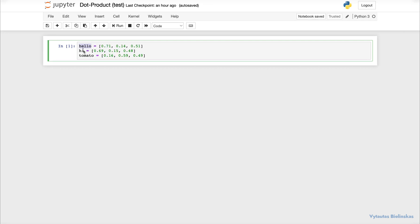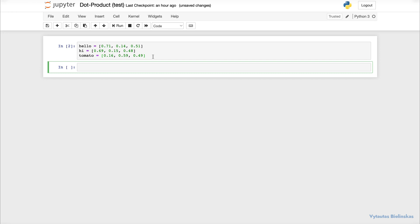So here we have three vectors. First one is hello. Second is hi. And the last one is tomato. Each of these is a three-dimensional vector. Each of them has three values within it. And because they are three-dimensional we can put them into a 3D chart.